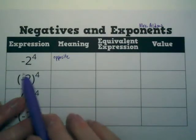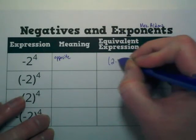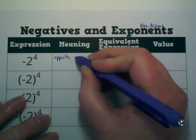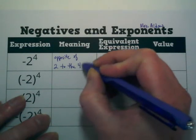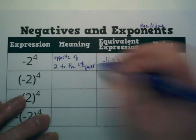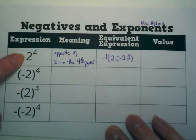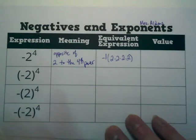So when I look here at this problem that's negative 2 to the fourth power, this is how I would write it. That's four 2's being multiplied. And I'm going to put them in parentheses to show that those are 2 to the fourth power, but they have a negative 1 in front of them. This is opposite of 2 to the fourth power.